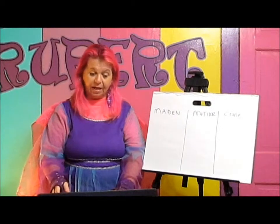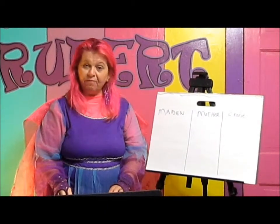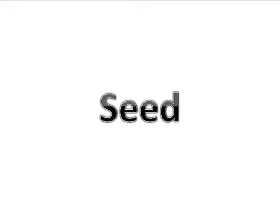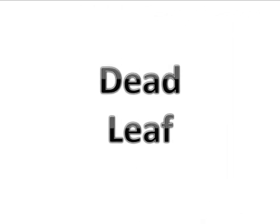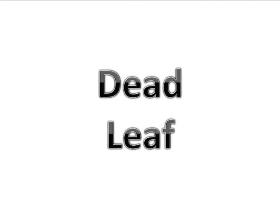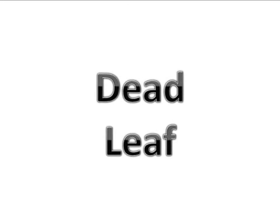So use your imagination and tell me which of the faces of the moon each of these clues matches. Here's the first one: a seed — any kind of seed at all. Is that a maiden, mother, or crone? A blooming flower — does that flower that's full remind you of the maiden, the mother, or the crone? How about a dead leaf — which one does a dead leaf represent? And how about an egg — any kind of egg — does it represent the maiden, the mother, or the crone?